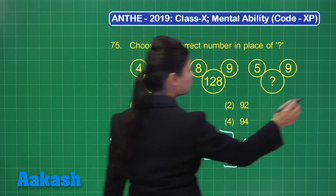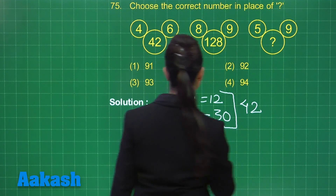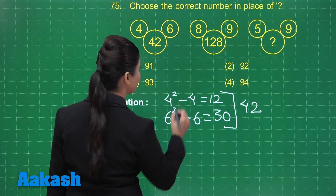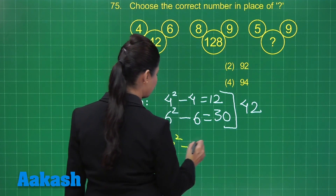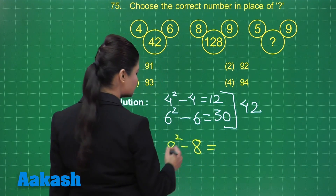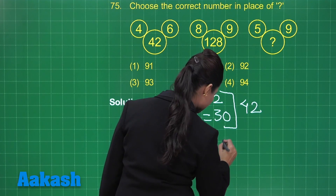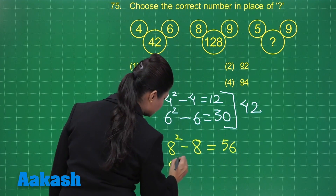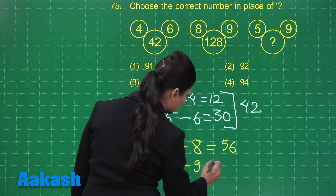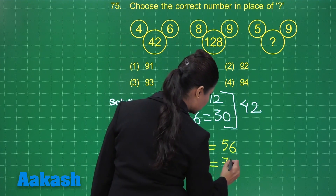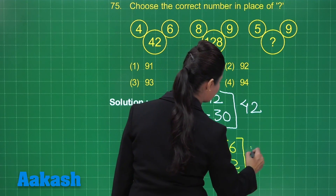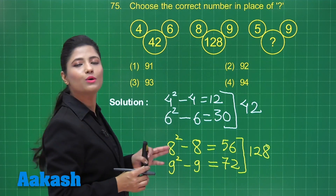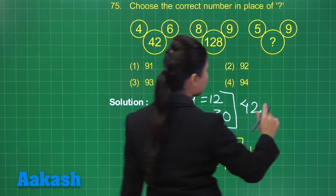Observing the same pattern in the second arrangement: 8 squared minus 8 = 64 minus 8 = 56. Next, 9 squared minus 9 = 81 minus 9 = 72. Taking the sum of these two: 56 plus 72 = 128. So the pattern is n² minus n applied to each of the first two numbers, then their results are summed to get the third number.